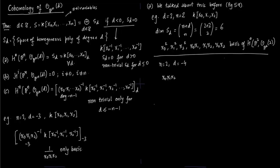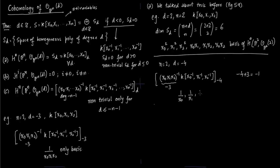Now if n = 2 and d = −4, we write this down again. We have −4 here and −3 here, so −4 + 3 = −1. Now you will have basis elements: 1/x0, 1/x1, 1/x2. You have to understand the grading in this sense — you first take the grading and then divide by this product.